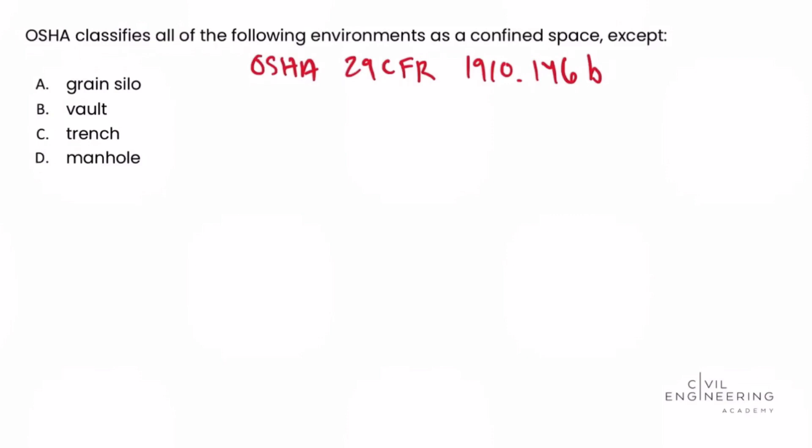In that definition, we were given some examples of a confined space. They said a vessel, a silo, a storage bin. So the grain silo answer choice is a confined space, so that would not be acceptable. The vault was also defined in the regulation, so that would not be acceptable.